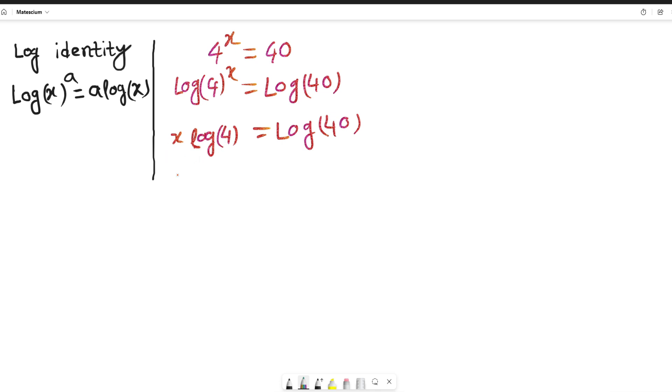That means to make this x free, somehow we have to remove this log 4 from the left-hand side. How to do that? This is so simple. We can divide both sides by log 4. That means x log of 4 divided by log of 4 on the left-hand side, and the right-hand side is log of 40 divided by log of 4.